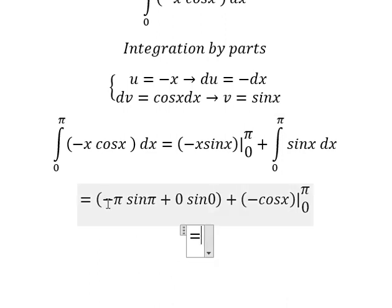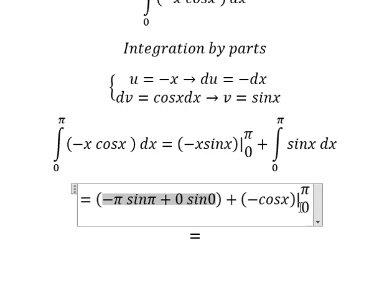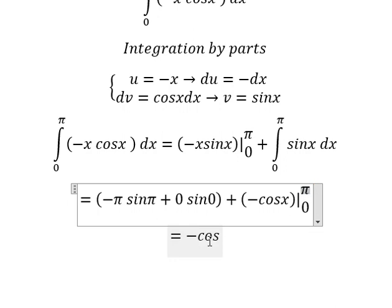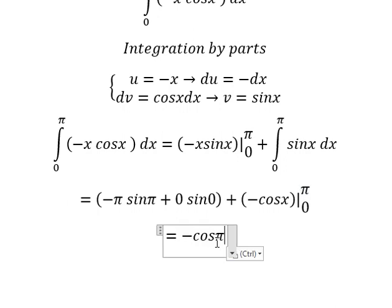Now we just have negative cosine π plus cosine zero, so we have 2.